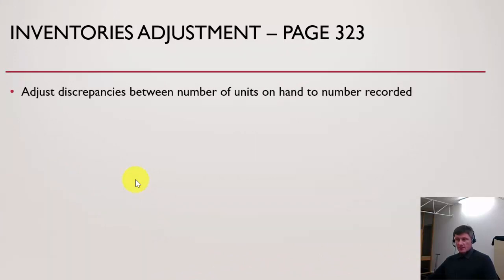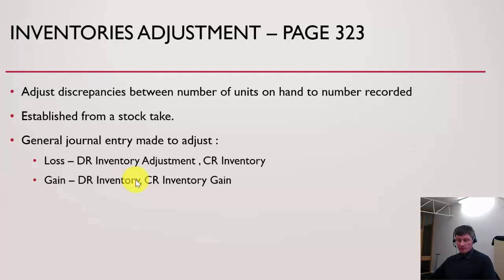Inventory adjustment is made to adjust any discrepancies between the number of units on hand and the number recorded in our actual records. We establish this information usually from a stocktake, which tends to be laborious but essential and must be carried out each time we want to calculate a profit. If we have a loss — meaning stock has been stolen, deteriorated, or simply lost — we debit inventory adjustment as an expense and credit inventory. Sometimes we have a gain, where supplier orders may be incorrect or recording errors occur, and that inventory gain is classified as other operating revenue.